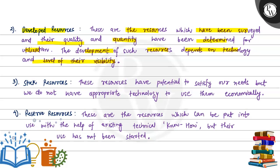Next, stock resources are those that have the potential to satisfy our needs, but we do not have the appropriate technology to use them economically. Reserve resources also have the potential to satisfy our needs, and they can be put into use with the help of existing technical know-how, but their use has not yet been started.